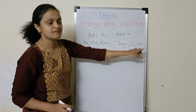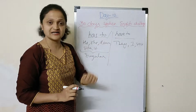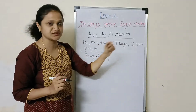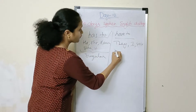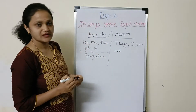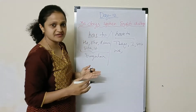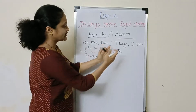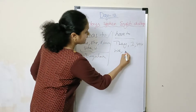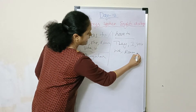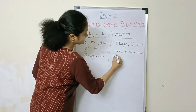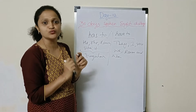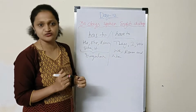Though 'I' and 'you' are singular, they act as plural — these are called special cases. They, you, we take 'have to.' Also, when names are taken together — like Ram and Sita — that becomes plural, so we use 'have to.'